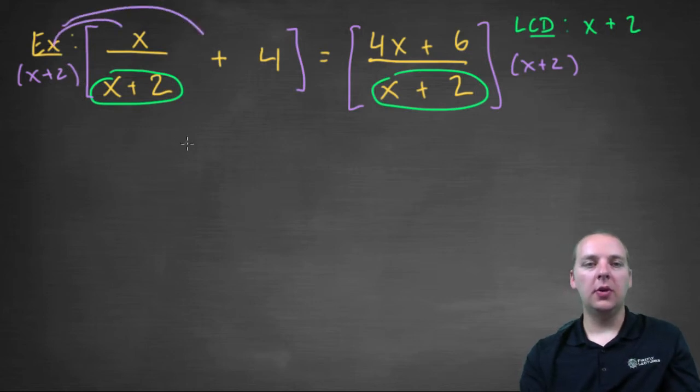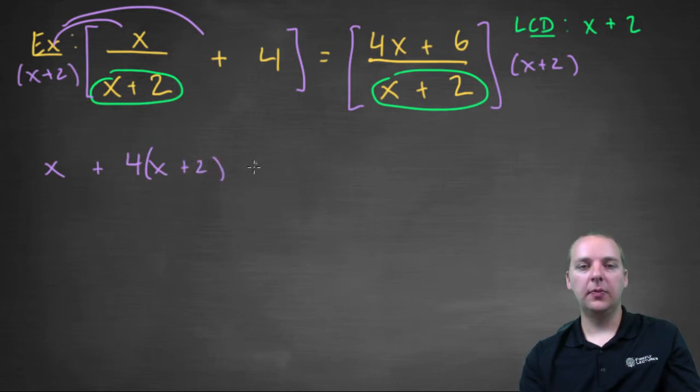I'll jot that down real quick: x plus 2 and x plus 2. We'll distribute along the left side. First term, the x plus 2's cancel, and you just get an x. Then we get 4 times x plus 2 equals, and on the right hand side the x plus 2's cancel, and you would get 4x plus 6.